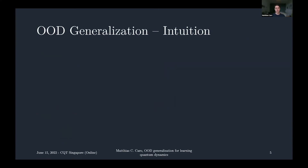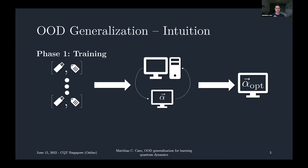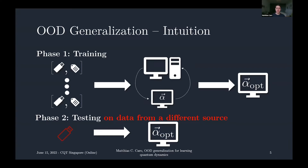In the testing phase, for in-distribution generalization, we test on data coming from the same source. There is an underlying probability measure from which we draw a new data point without a label, feed it into the trained model, and the model outputs a label that should be close to the true label. Out-of-distribution (OOD) generalization is different: the testing ensemble is different from the training distribution, though it still has some similarities.